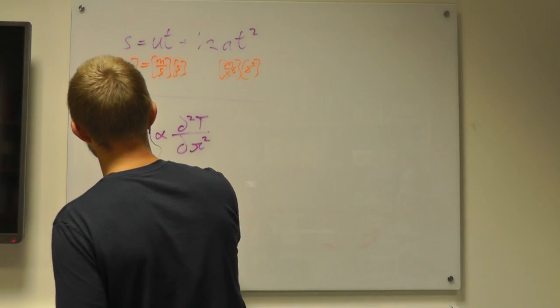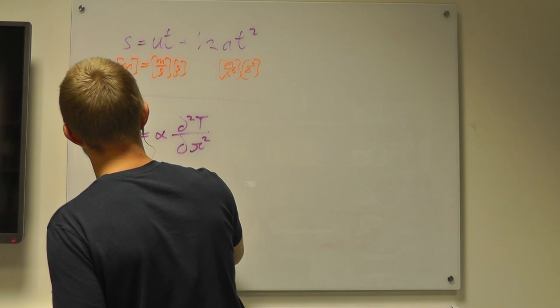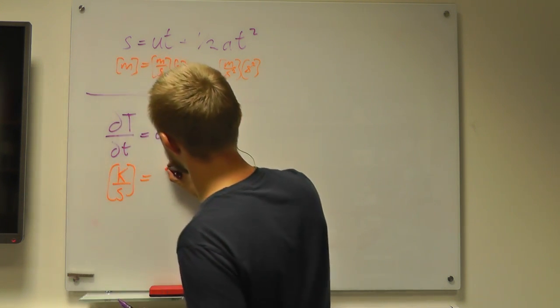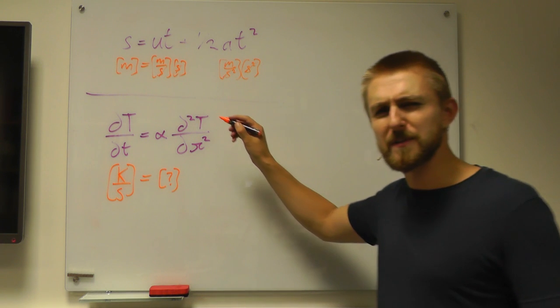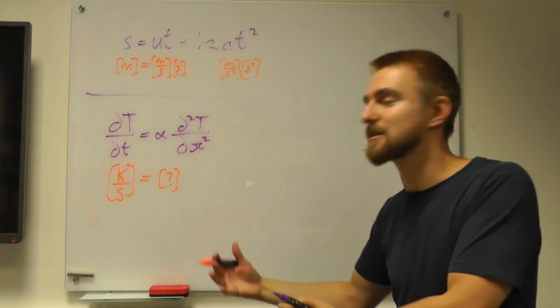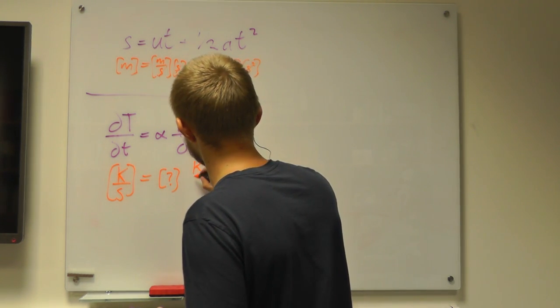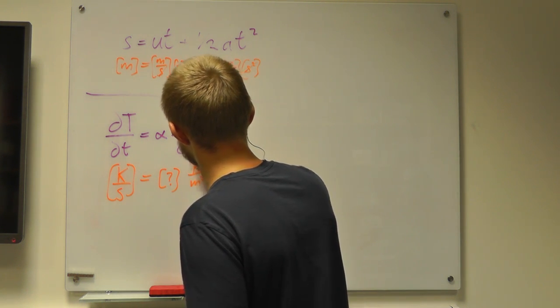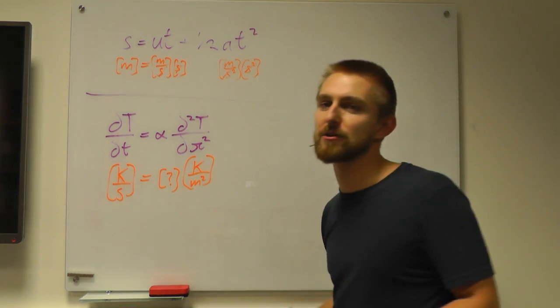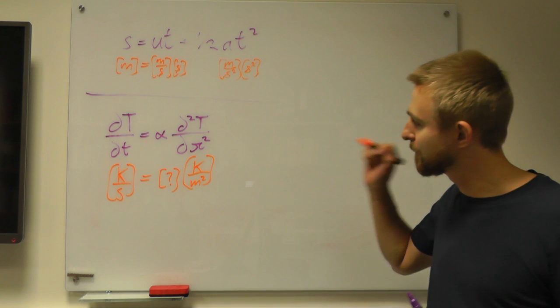So this is going to be Kelvin per second, and we'll leave a little question mark in a box for alpha. And this one's going to be Kelvin per meter squared. Don't fall into the trap of thinking that it's Kelvin squared per meter squared for a second derivative. It's not. Kelvin per meter squared.